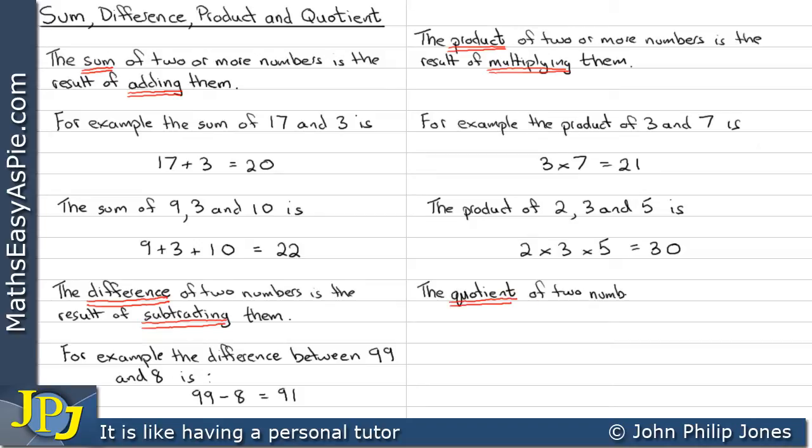The quotient of two numbers is the result of dividing them. For example, the quotient of 30 and 5 is 30 divided by 5, which is equal to 6.